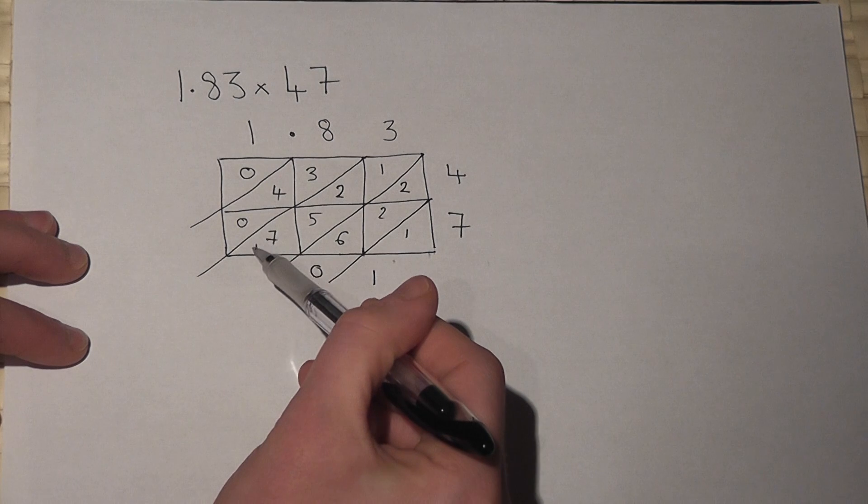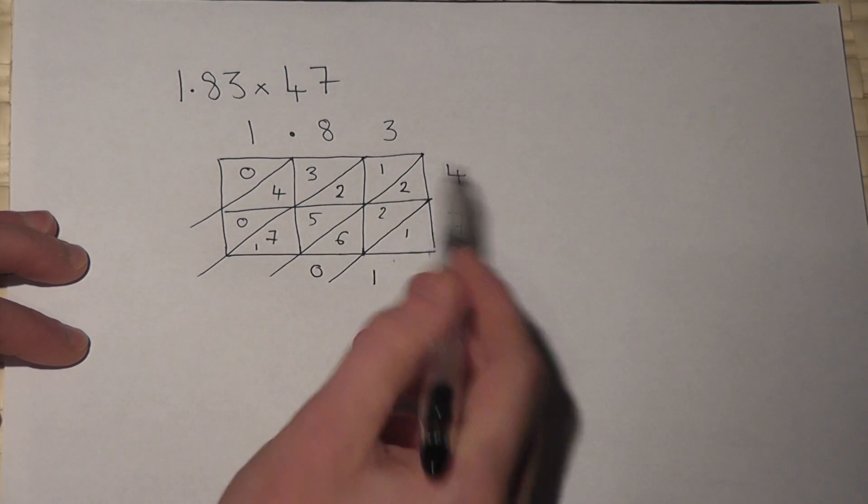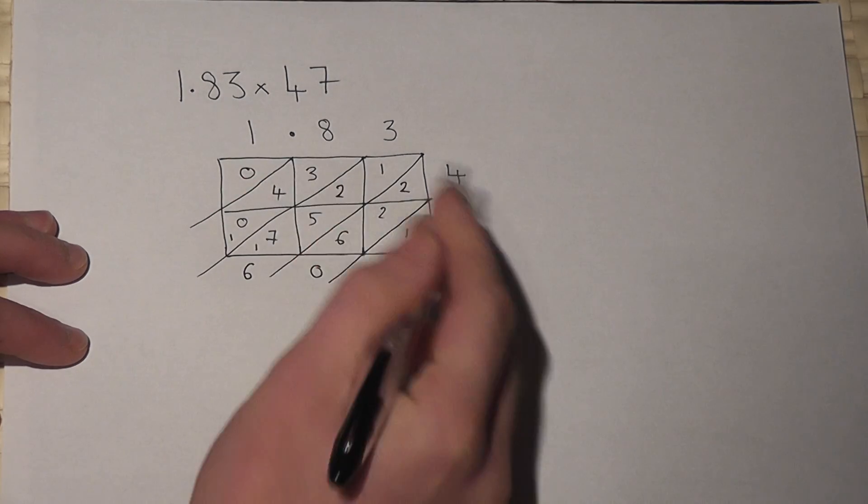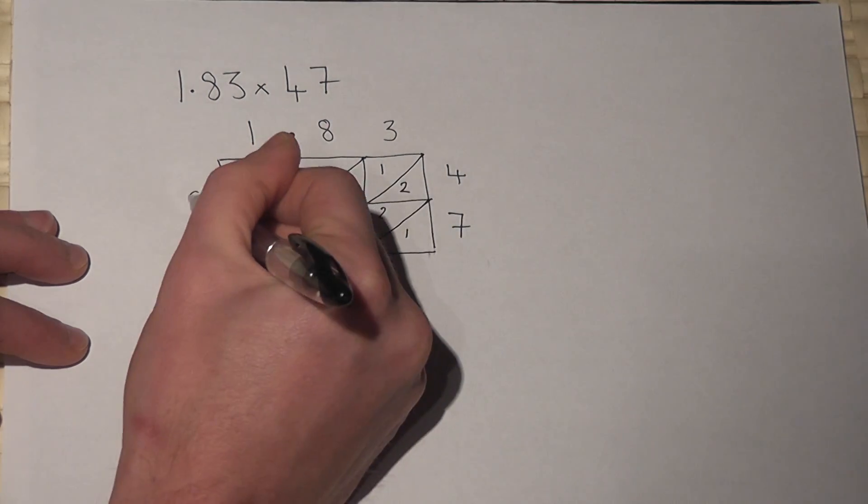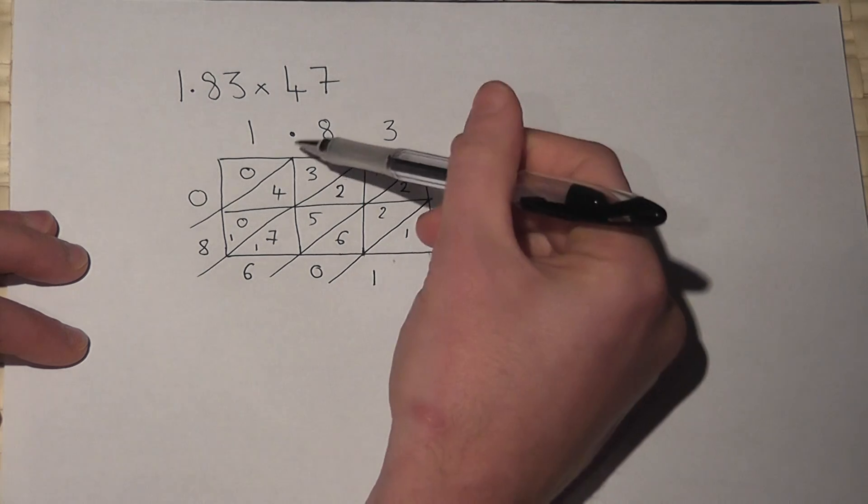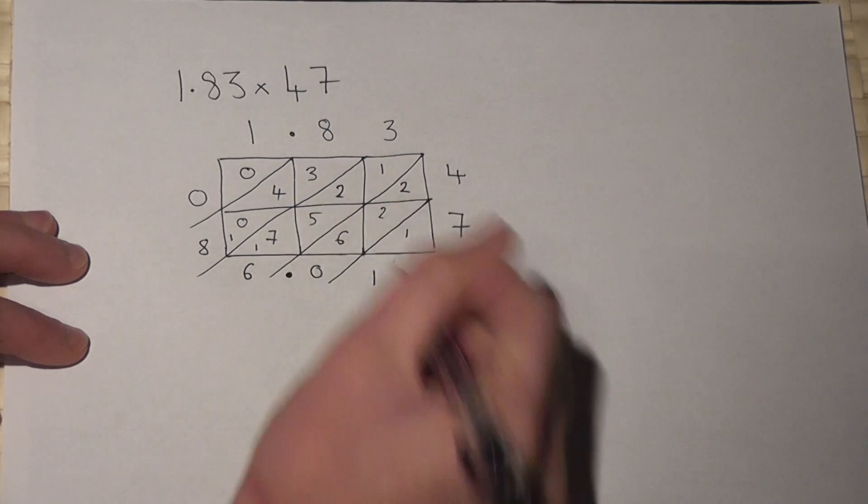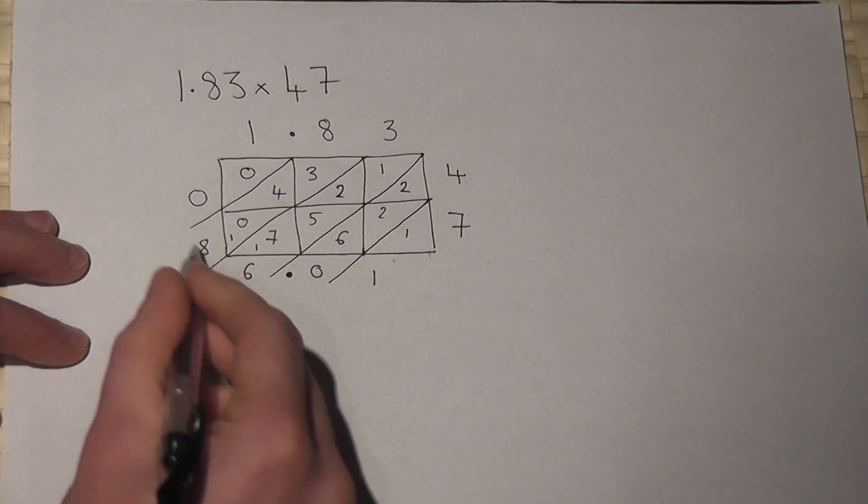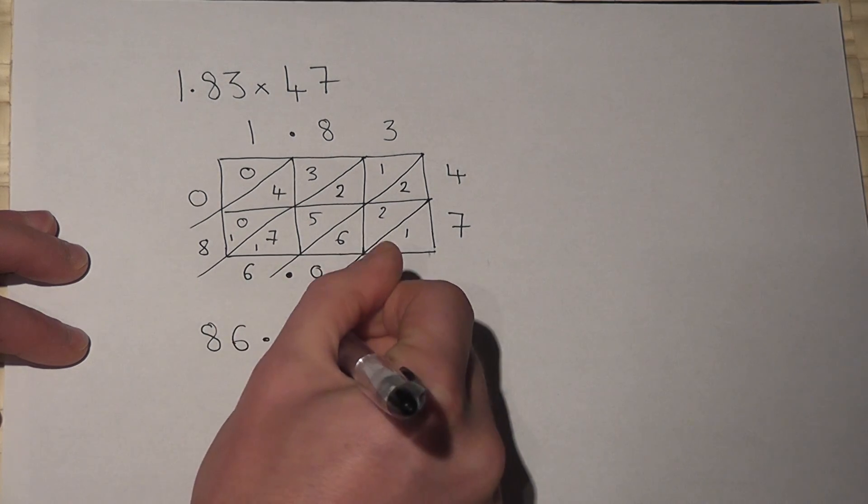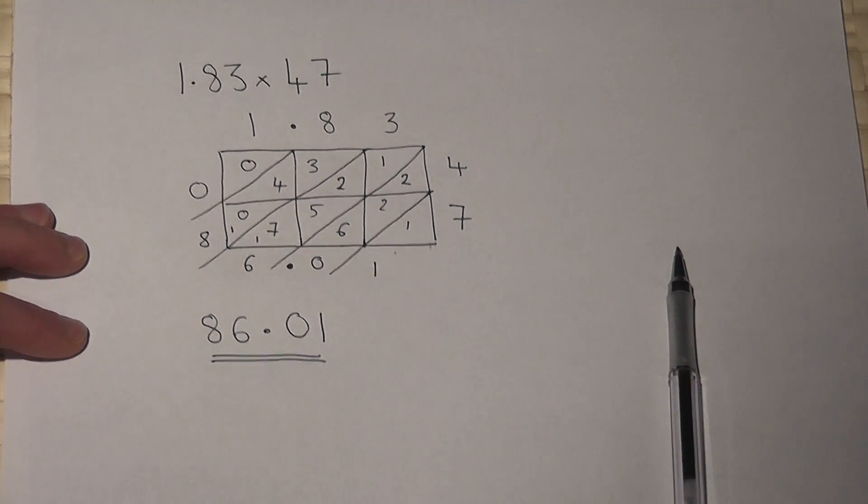So there's my 10. 1 plus 4 plus 3 is 8, and here's a 0. The decimal point, in this case, just falls down the line and ends up here. So the answer we can read off is 86.01.